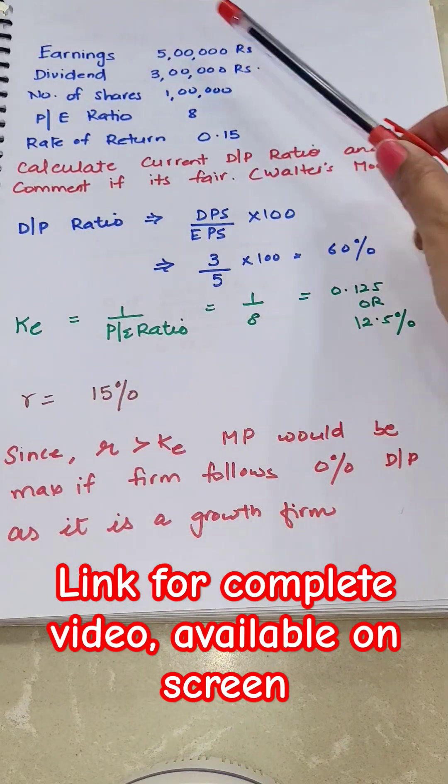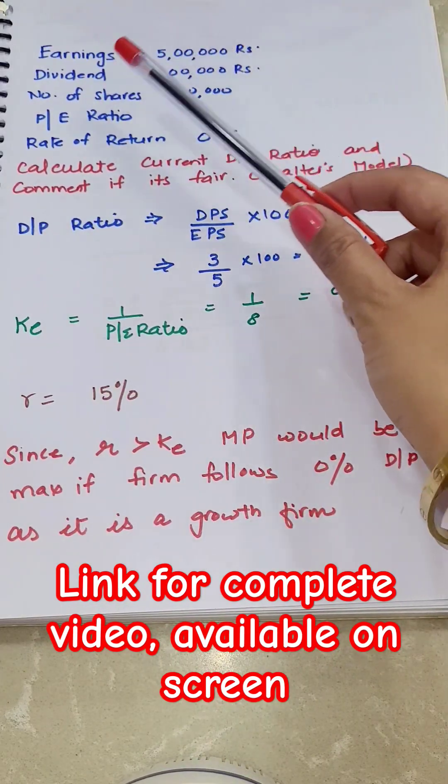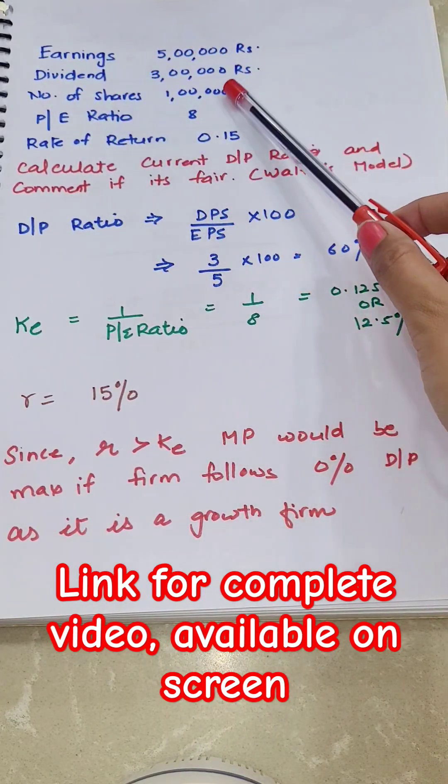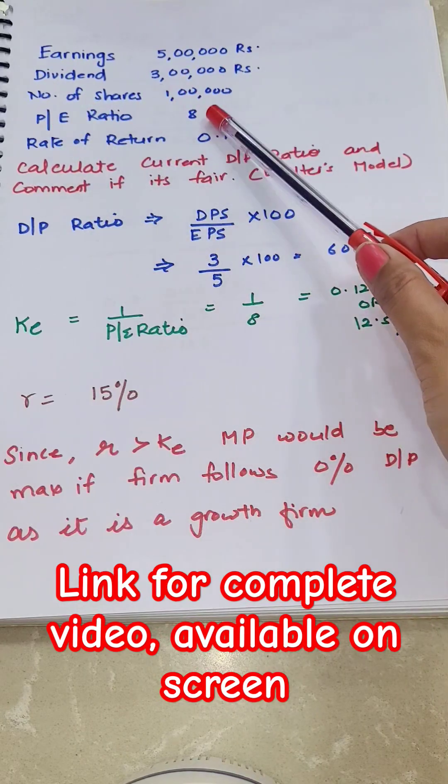Here we have given earnings 5 lakh rupees, dividend paid 3 lakh rupees, number of outstanding shares 1 lakh, price earning ratio is 8,